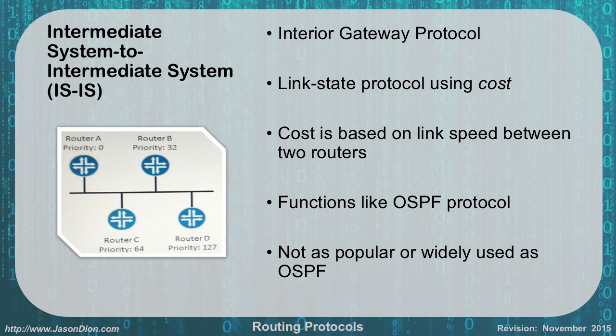IS-IS stands for Intermediate System to Intermediate System. This is another interior gateway protocol. It also uses link state with cost calculated based on link speed between two routers — it functions a lot like OSPF. It wasn't as popular or widely used as OSPF though, so most people are still using OSPF.